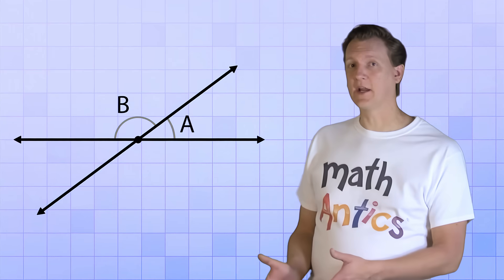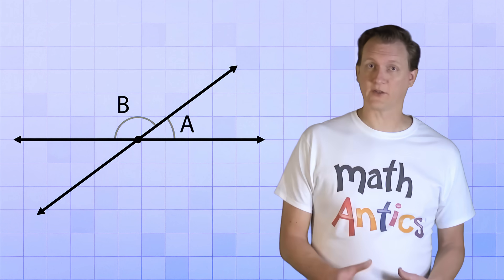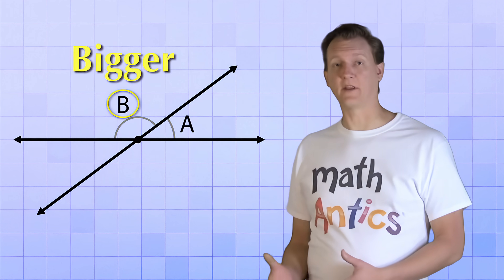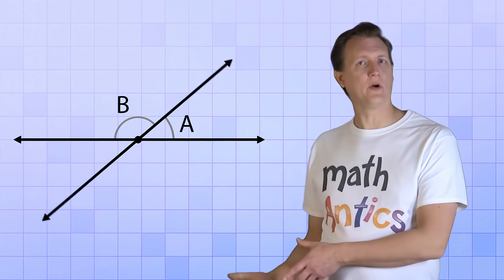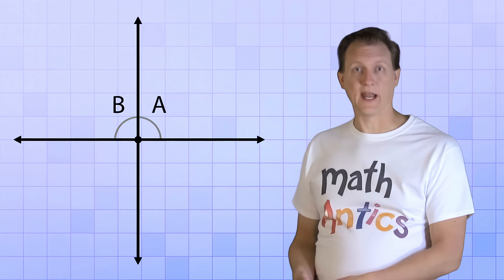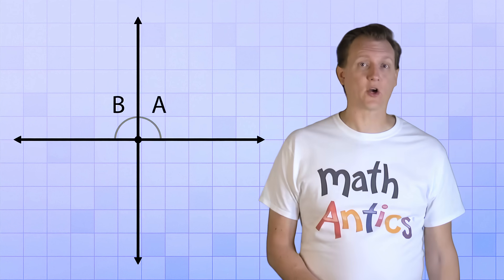Alright then, so now we have a diagram that shows angle A and angle B. And you might notice that those angles aren't the same size. B seems to be bigger than A. But what if we rotate one of our lines until the angles do look like they're the same size? Now our angles look kind of like a plus sign. Lines arranged like this are called perpendicular.